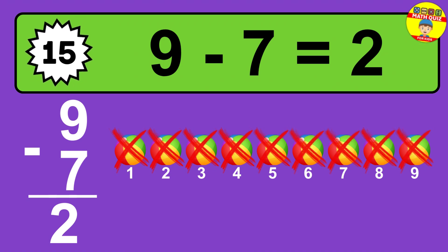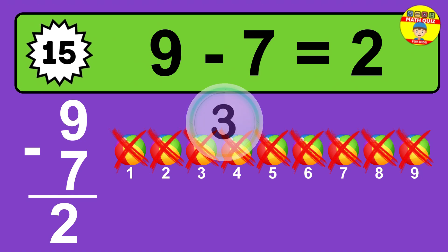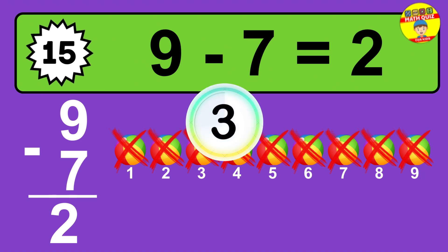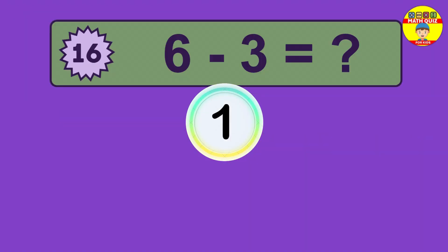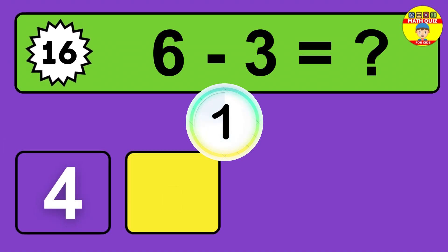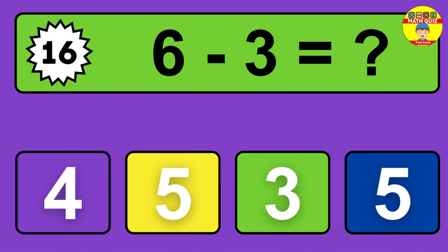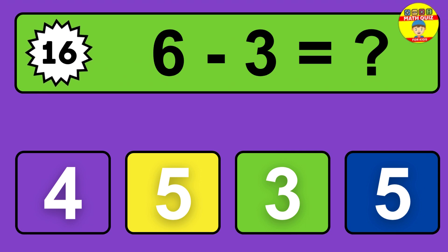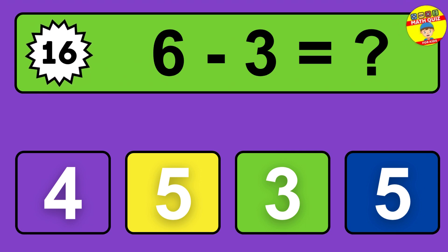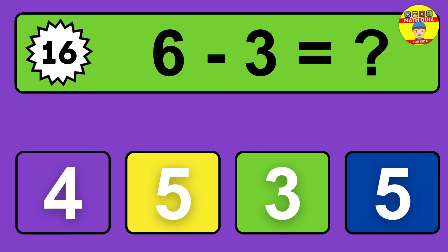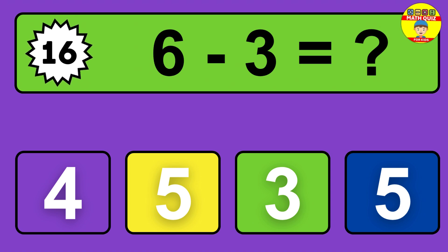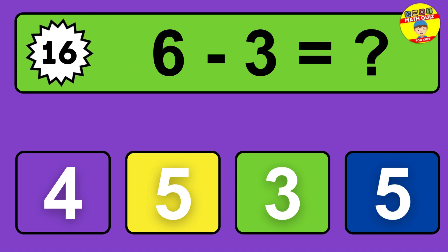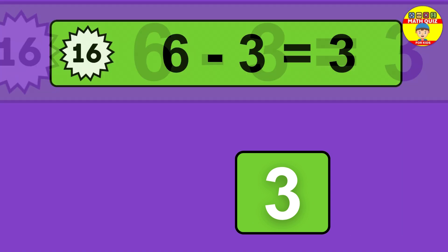Question seventeen: eight minus one equals what? So the answer is eight minus one is seven. Let's count it — one, two, three, four, five, six, seven.